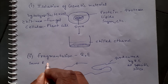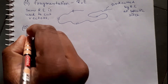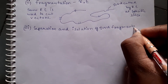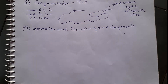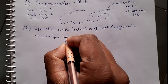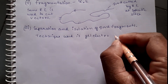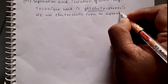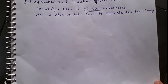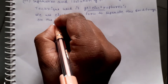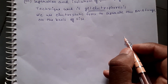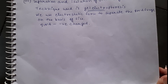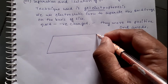Now that we have isolated and cut the DNA, it is time for the separation and isolation of DNA fragments by a technique called gel electrophoresis. Gel electrophoresis is an important technique with respect to exams, as many questions come from this topic. Gel electrophoresis is used to separate the DNA fragments so we can identify and obtain the desired DNA. In electrophoresis, an electrostatic force is used to separate the DNA fragments on the basis of their size. The DNA molecule is negatively charged and it moves toward the opposite positive end, the anode, on an agarose gel. Now I am going to draw a diagram of agarose gel electrophoresis.